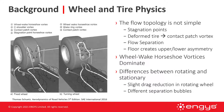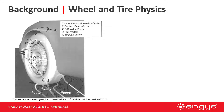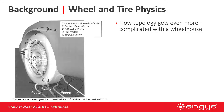The differences between a rotating and a stationary wheel is that there's a slight drag reduction in a rotating wheel scenario, and there are really different separation bubbles and different vortices forming over the back of the tire. Now remember this is a standalone tire on itself. So if we're looking at something that has a wheelhouse, flow topology gets even more complicated.